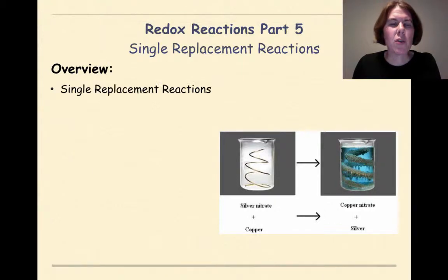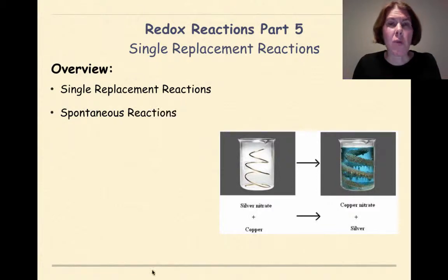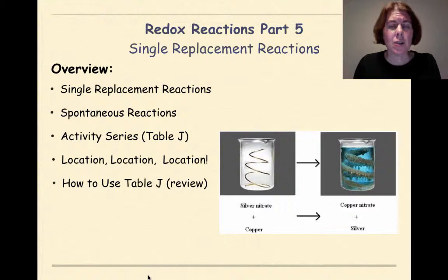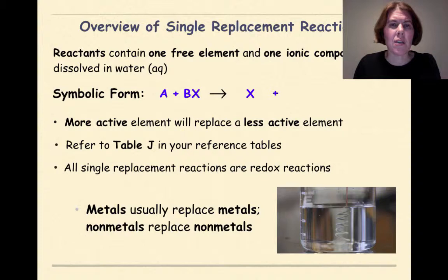Specifically, we're going to look at single replacement reactions, how a reaction can be spontaneous, the activity series — otherwise known as Table J of your reference tables — how to look at Table J and figure out whether a reaction is going to be spontaneous or not, how to use Table J one more time, a little review, and finally a little bit of practice at the end.